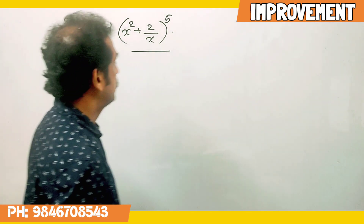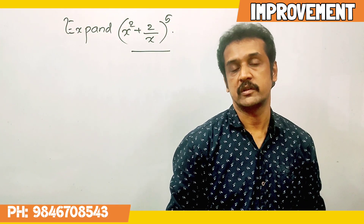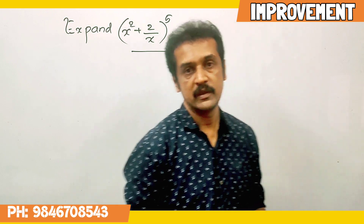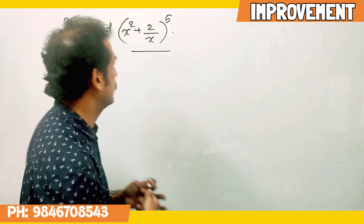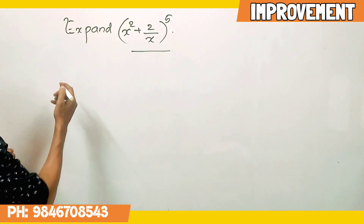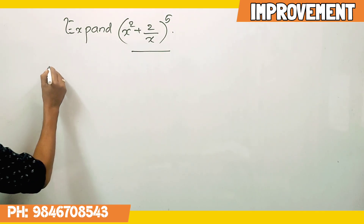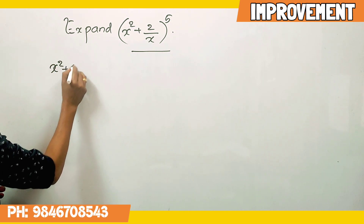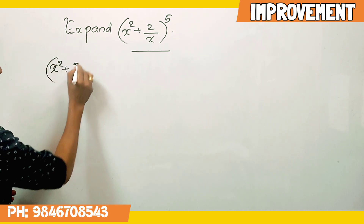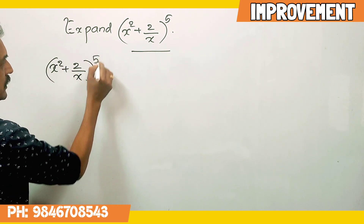The first question is x squared plus 2 by x, whole raise to 5. Now, if you want to see the expansion, let's talk about x squared plus 2 by x, whole raise to 5.